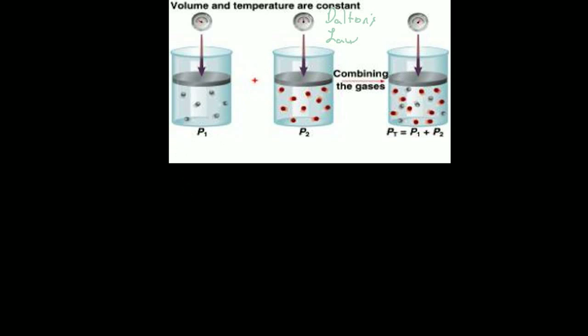Basically what Dalton's Law is saying is that the total pressure of a gas, pressure total, is equal to the partial pressures: pressure one, partial pressure one, plus partial pressure two, or three or four or five or six. It's equal to all of the partial pressures. That may seem like a no-brainer, but we're going to get a little bit deeper in just a second.